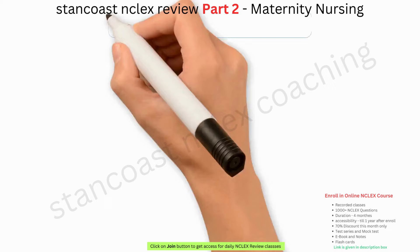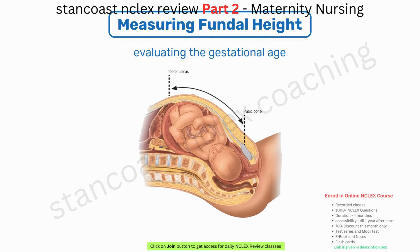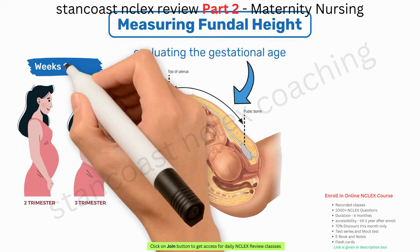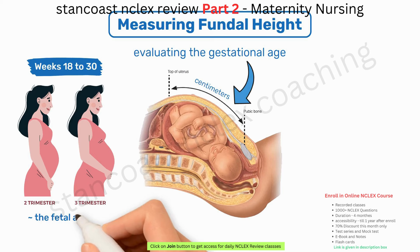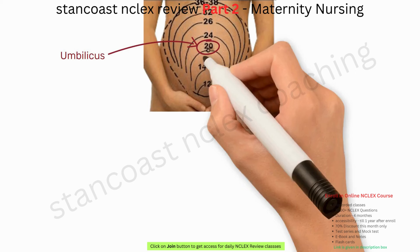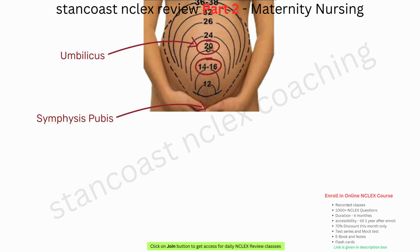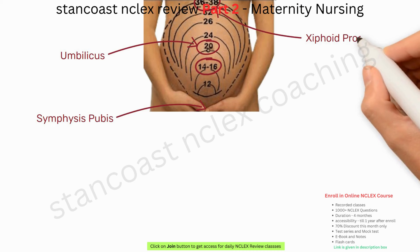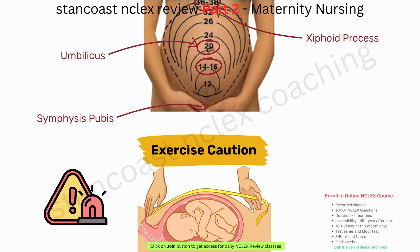Measuring fundal height is a valuable technique for evaluating the gestational age of the fetus during pregnancy. In the second and third trimesters, weeks 18 to 30, the fundal height in centimeters approximately corresponds to the fetal age in weeks minus 2 centimeters. At 20 weeks the fundus should be near the umbilicus; at 16 weeks midway between the symphysis pubis and umbilicus; and at 36 weeks it should reach the xiphoid process. Caution is needed in the supine position, as it can lead to supine hypotension.